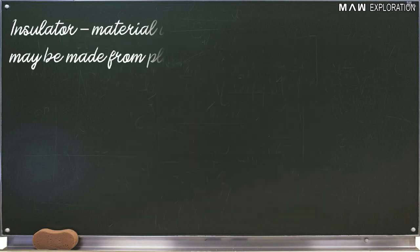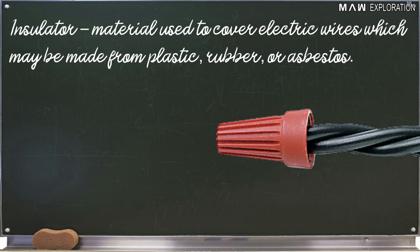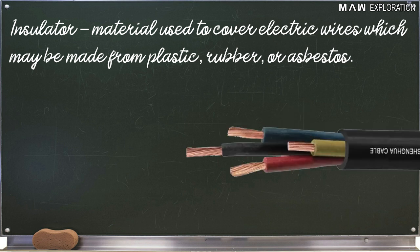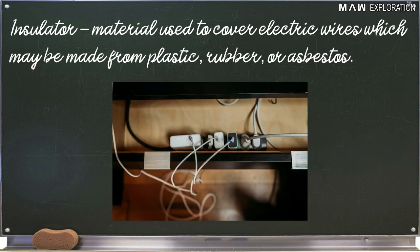Number seven, insulator. Insulator is the material used to cover electric wires which may be made from plastic, rubber or asbestos. This is the reason why we don't feel the current on our electric cables.